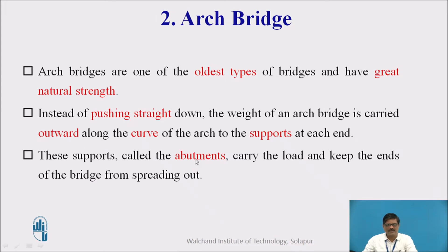The second one is an arch bridge. In arch bridges, the load transfer mechanism is quite different from the beam bridge. Arch bridges are one of the oldest types of bridges and have great natural strength. Instead of pushing straight down, the weight of an arch bridge is carried outward along the curve of the arch to the supports at each end. So the basic difference is that the load is transferred horizontally along the curve of the arch, and ultimately the load is transferred to the edge supports — the abutments — which carry the load and keep the ends of the bridge from spreading out.